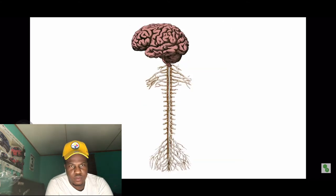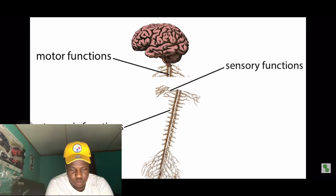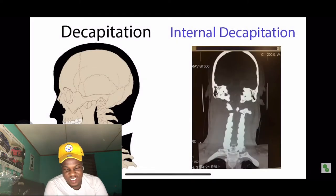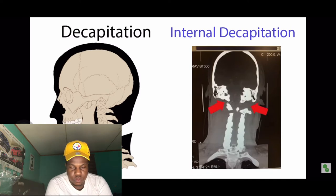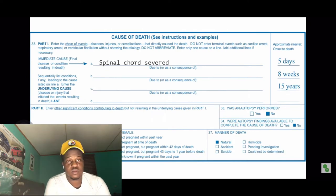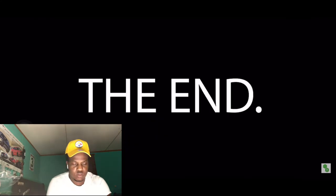The spinal cord, by the way, regulates a multitude of motor, sensory, and autonomic functions. But your head's gone, so none of that matters. Kernel decapitations only involve the separation of the spinal cord from the base of the skull, but the neck is still attached to the body. The exact cause of death in a decapitation is technically severing of the spinal cord and rapid blood loss. And that's all there is to know about the anatomy of decapitation.